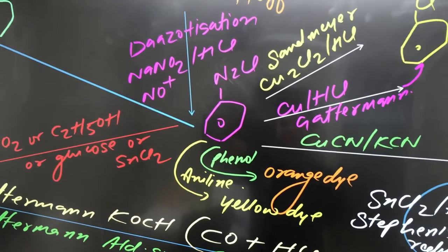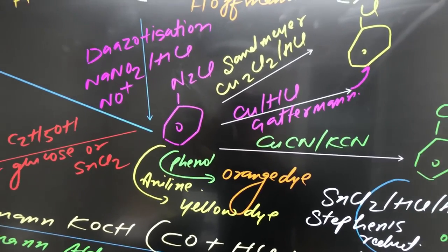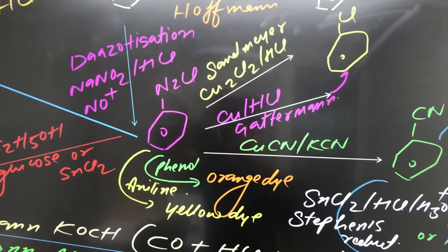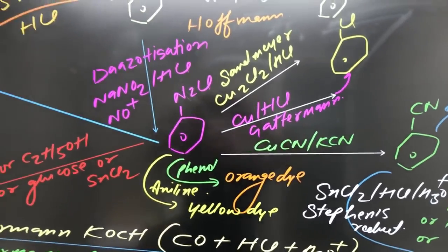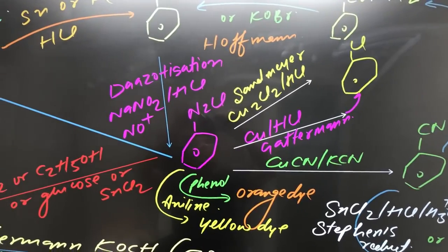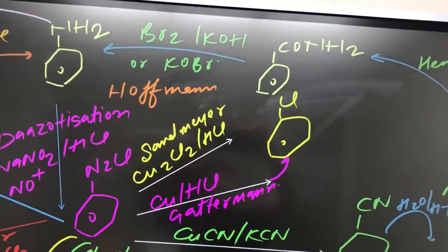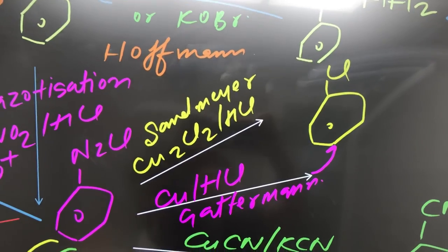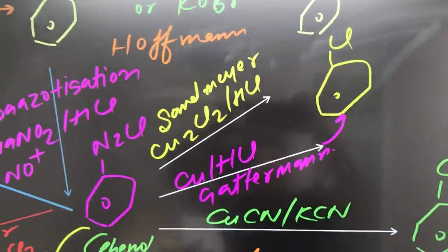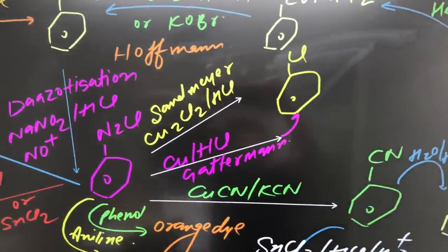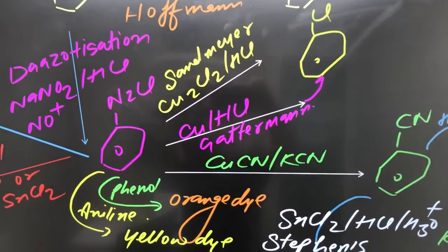This benzene diazonium chloride's reactions in your NCERT are given on page number 394 to 396 if you talk about old NCERT, and for new NCERT it's given on page number 404. Now see to it everyone. If we react benzene diazonium chloride with cuprous chloride/HCl, this is known as Sandmeyer reaction, very good yield. And if we are doing the reaction with Cu/HCl, this is known as Gattermann reaction, yield is poor.